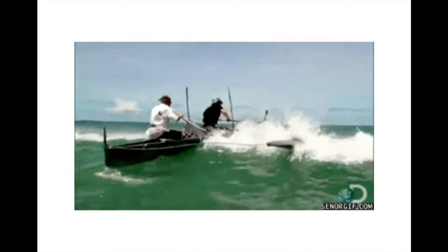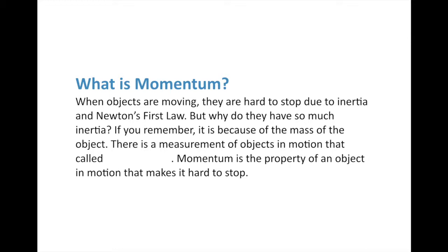A quick review of Newton's first law: when objects are moving, they're hard to stop due to inertia. Newton's first law says that an object in motion will stay in motion, and an object at rest will stay at rest unless an outside force acts on it — a force is just a push or a pull. Objects have so much inertia when in motion because of their mass. The more mass you have, the more inertia you have. There's a measurement similar to inertia, but it only applies when an object is in motion — it's called momentum.